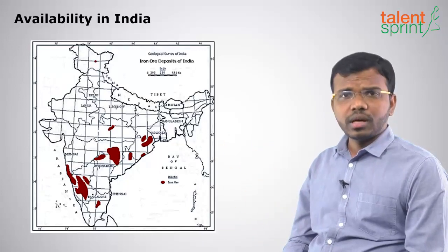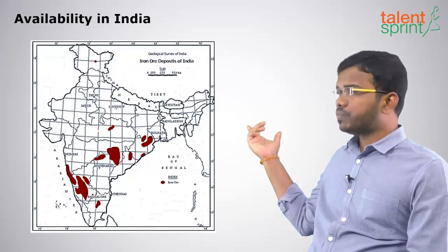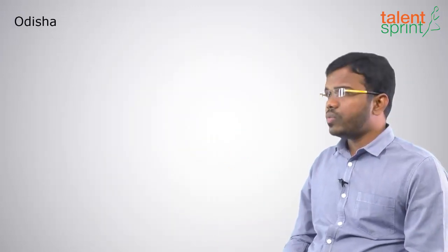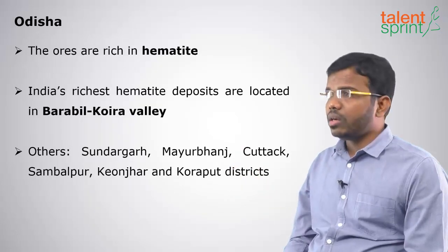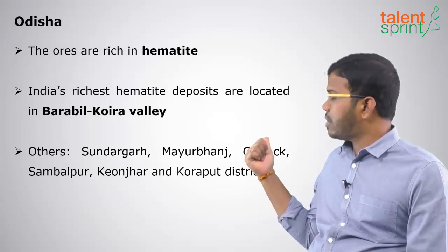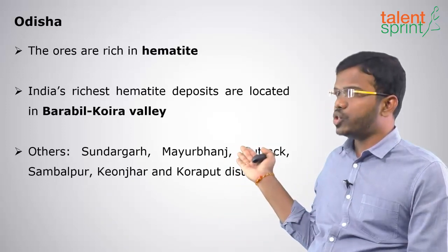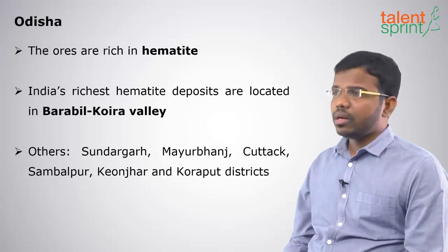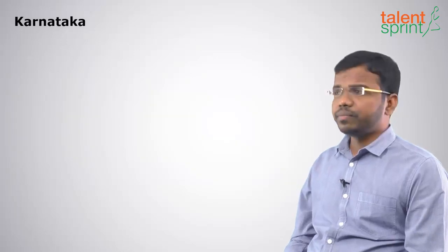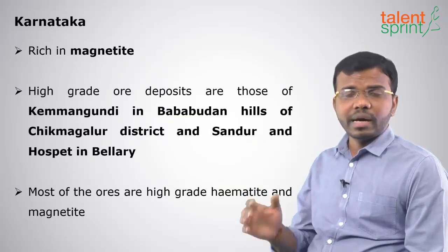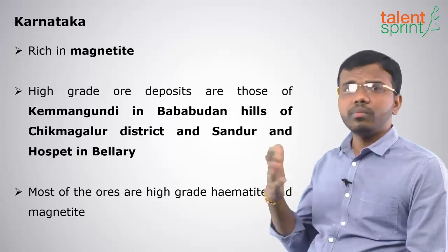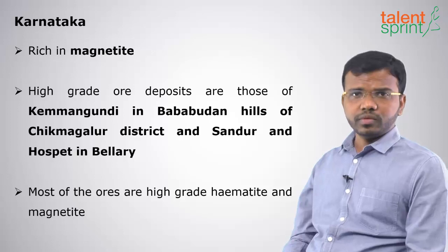Looking at the availability of iron in India — you can see in the picture the main Kadapa and Dharwar systems in Karnataka, Kerala, Goa, and Maharashtra, and Jharkhand, Odisha, and some parts of Rajasthan. The first state rich in iron is Odisha, which is rich in hematite. Hematite deposits are located in the Barbil-Koira Valley; other rich districts include Sundargarh, Mayurbhanj, Cuttack, Sambalpur, Keonjhar, and Korapur. Karnataka is very famous for iron and is rich in magnetite. The Bababudan Hills are very famous, and we also have the Kudremukh mines.